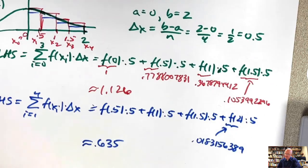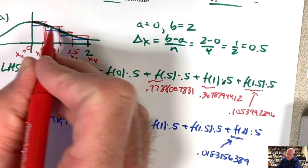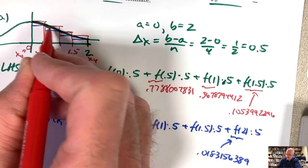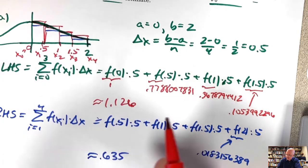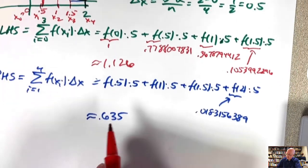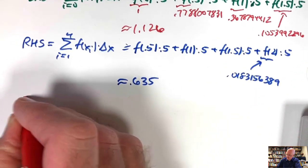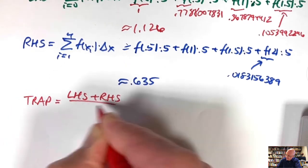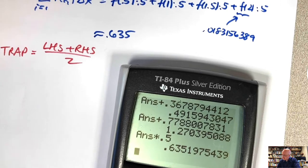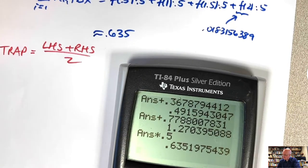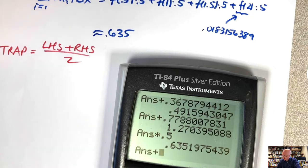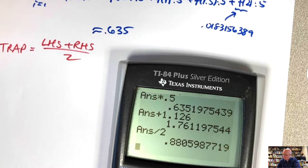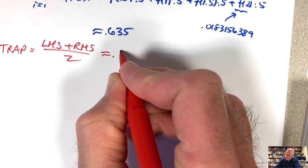Averaging the two to get the trapezoid estimate: LHS plus RHS divided by 2 gives 1.126 plus 0.635 divided by 2, which is approximately 0.88. The trapezoid estimate geometrically represents areas of trapezoids using secant lines — these will be below the curve when concave down and above when concave up.